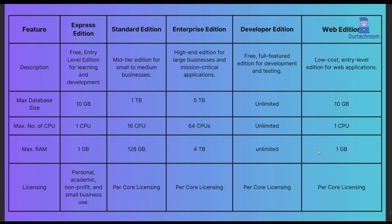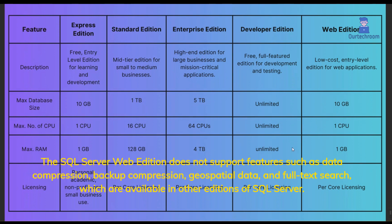The cost of the SQL Server Web Edition depends on the number of cores and the amount of memory utilized. It does not support features such as data compression, backup compression, geospatial data, and full-text search, which are available in other editions of SQL Server.